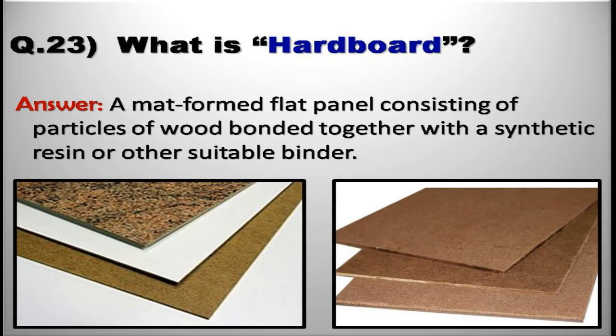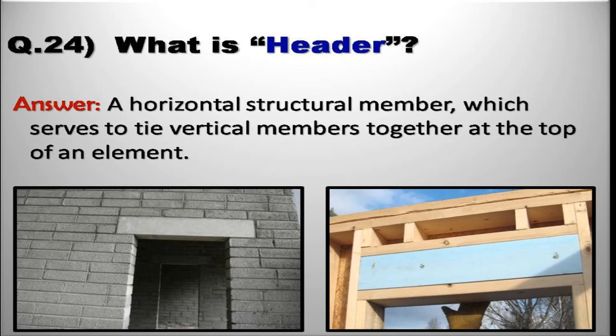What is hardboard? A mat formed flat panel consisting of particles of wood bonded together with a synthetic resin or other suitable binder. What is header? A horizontal structural member which serves to tie vertical members together at the top of an element.